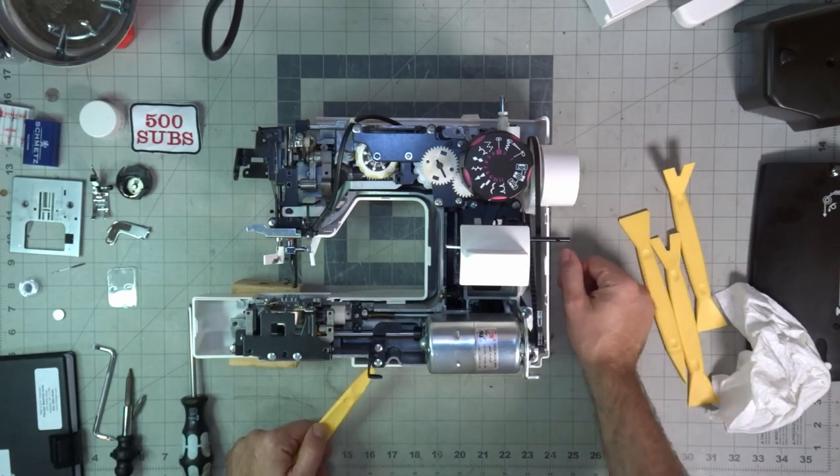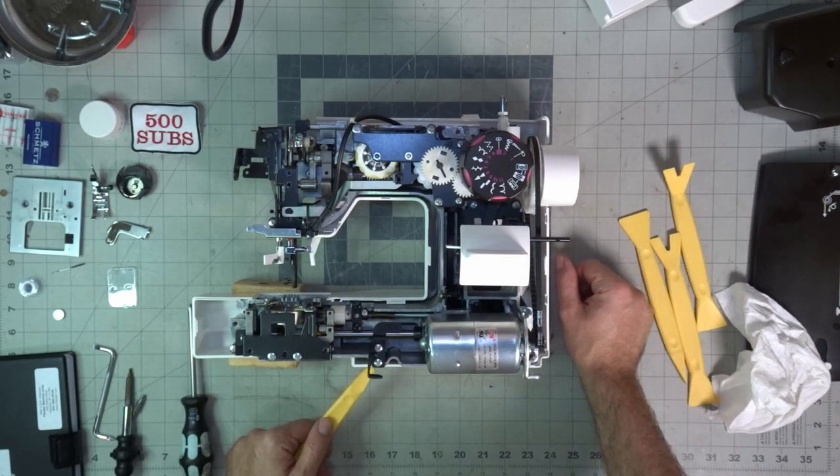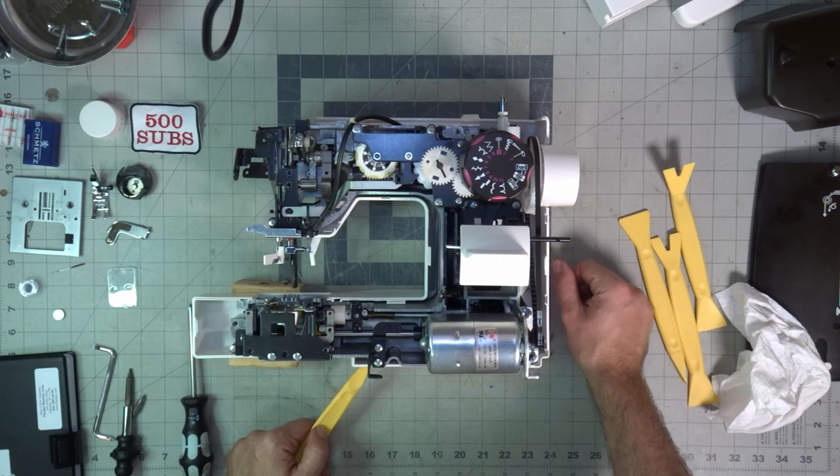So, this machine was not made to be taken apart. It was not made to be re-oiled at home. This was made to be used until it's done and thrown away. These are all made to be disposable. So, that's every machine that you have nowadays.